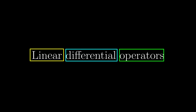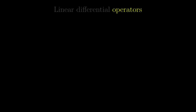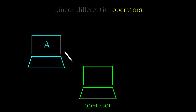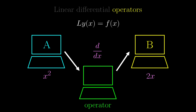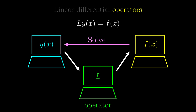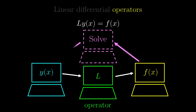We are going to explain each word separately. Operators in this context means a function that has a function as input, and the output being another function. For instance, differentiation is an operator, because the squaring function is mapped to the doubling function under differentiation. So when we see an equation like this, it means that the function y of x, when fed into the operator L, becomes f of x. By solving a differential equation, we mean recovering y of x from f of x. So what Green's functions try to do is to construct another operator that, when the forcing term is fed, it outputs the desired solution y of x.